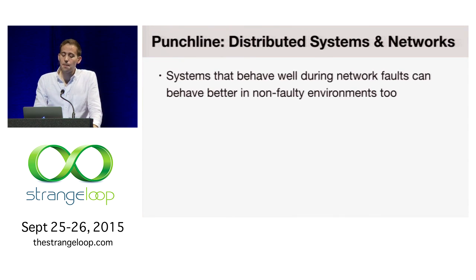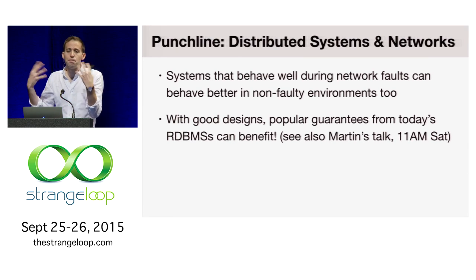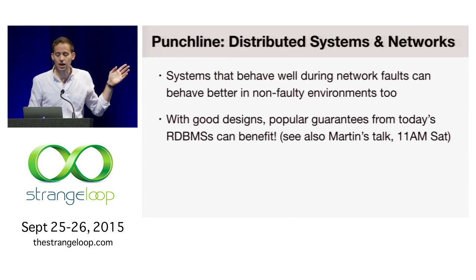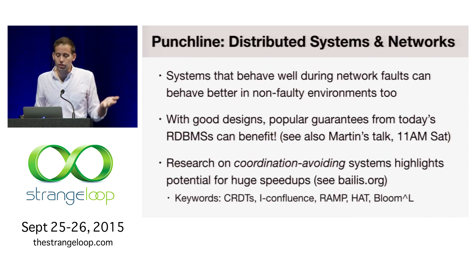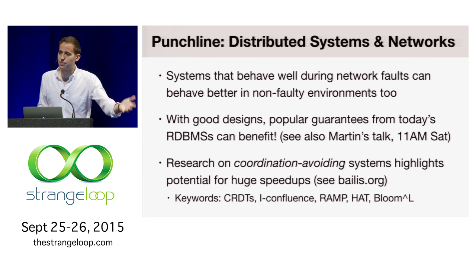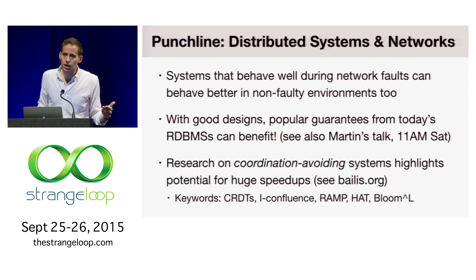The punchline here is that in distributed systems design, systems that behave well during network faults can actually behave better during cases where there are no failures as well. With good designs that explicitly account for the worst case — built from the ground up with the assumption that bad things will happen — we can benefit over legacy implementations. Research from my own group and others highlights that when we take coordination-free execution as a first-class concern, whether at the language level in languages like Daedalus and Bloom, at the system level in work on iConfluence and RAMP, or at the data type level in CRDTs, we can frequently provide meaningful guarantees that occupy a different corner of the design space.